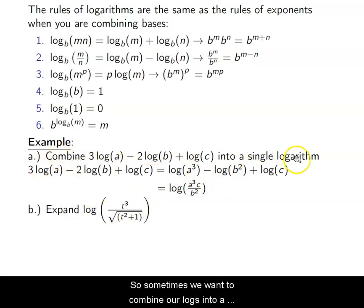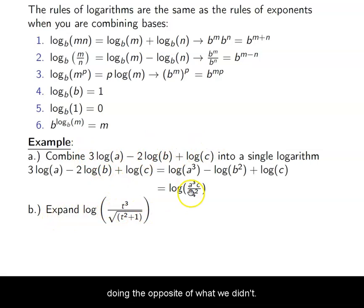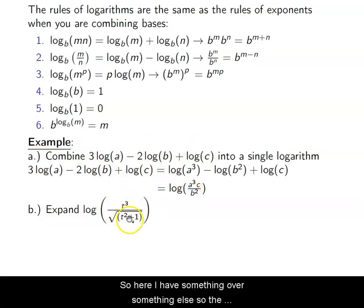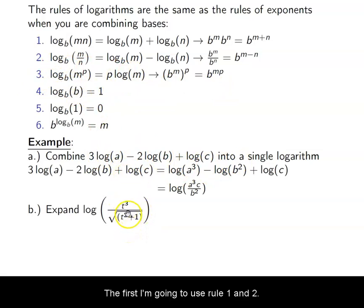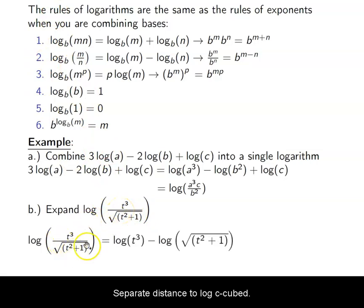Sometimes we want to combine our logs into a single logarithm. Sometimes we want to expand it. We're going to expand this as much as we can. So we're doing the opposite of what we did in part a. Here I have something over something else. So the first rule that I want to apply is two. I'm not going to pull the three out or the square root as a power. I'm not going to pull that out yet. I'm going to first try to separate them into separate logs, and then I can apply this p-log rule, number three. So first I'm going to use rule one and two, really just rule two, and I will separate this into log t³, the numerator, minus log √(t²+1), my denominator. It's on the bottom, it has to be subtracted.